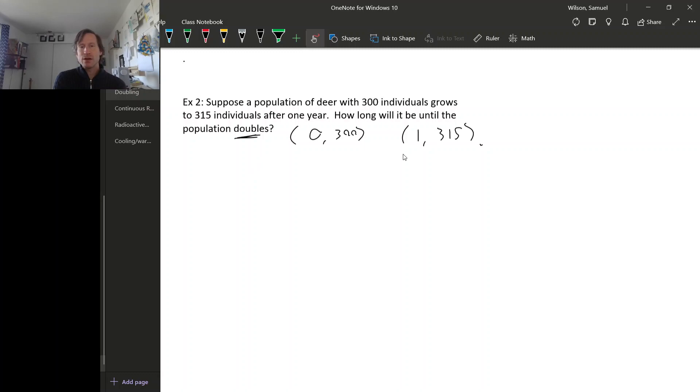So our exponential function, let's call it P of T, will look like A times B to the T. Either B to the T or E to the KT is fine, let's use B to the T. So remember we can plug in these data points. Plugging in the first data point we get 300 equals A times B to the 0, so that's just A. So we know A already.